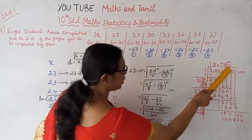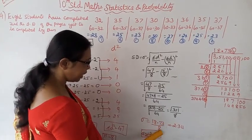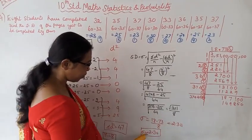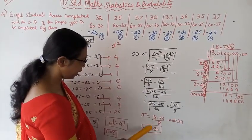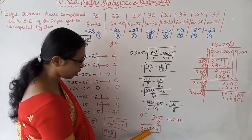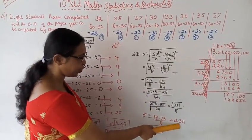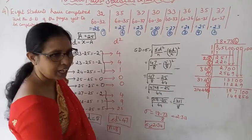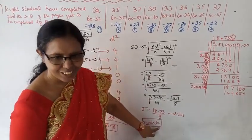Root of 351 is approximately 18.73. So sigma = 18.73 divided by 8 = 2.34. The standard deviation value, sigma, is approximately 2.34.